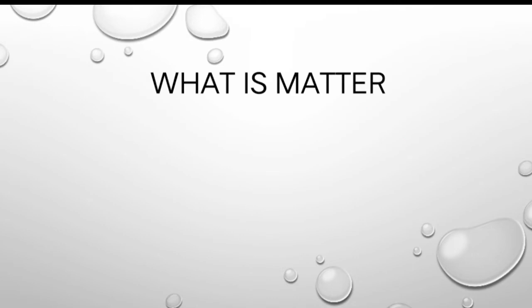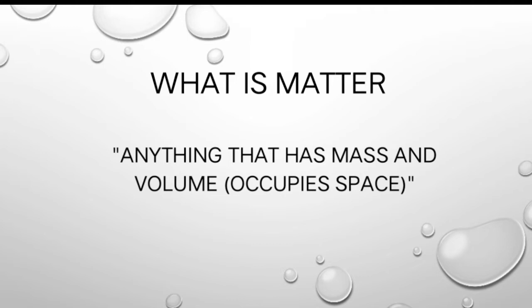First, what is matter? Anything that has mass and volume or occupy space. Matter is defined as any substance that has mass and occupy space. All atoms and molecules are made up of very small parts of matter. Matter contains huge numbers of particles that vary in their size, shape, arrangement, motion, and individual properties.